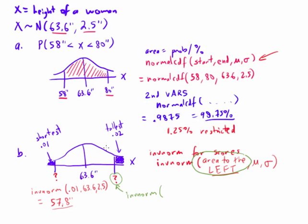What we actually want to put in is how much is to the left. Well, if there's 2% to the right, then this is going to be 98% to the left. So inverse norm 98, 63.6, 2.5.